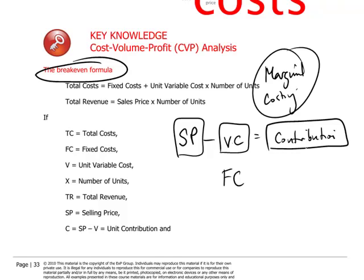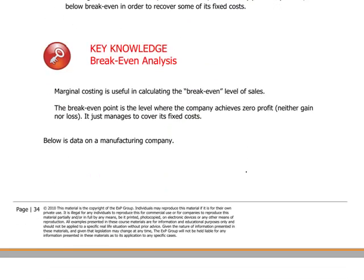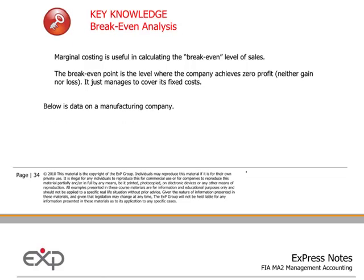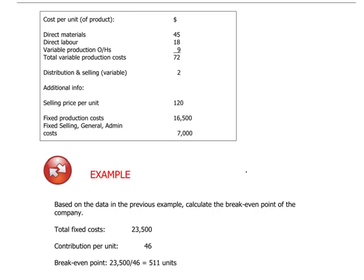The contribution amount generated by a business is the amount that can be put towards covering fixed costs. And this allows us to determine what the break-even level is of a business. Let's look at a simple numerical example. Take a manufacturing company that has the following cost card. Direct materials, $45. Direct labor, $18. And variable production overheads of $9. In other words, the total variable production costs are $72. Distribution and selling costs, which are variable in nature, is another $2. And we sell the product for $120.